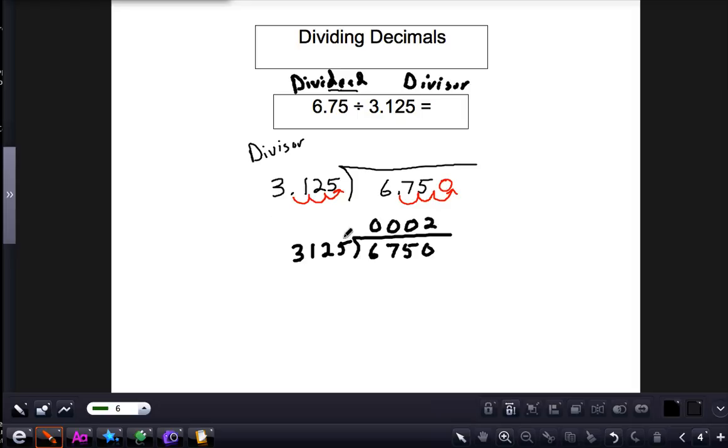So multiply: 2 times 5 is 10, then 2 times 2 is 4 plus 1 is 5, then the 2, and then 3 times 2 is 6. Subtract, and we are left with 500. Here we can place a remainder of 500, but since we're dealing with decimals, we can also continue and have a decimal answer.